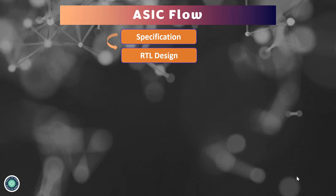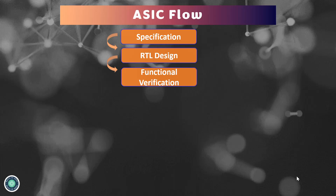After specification, RTL designing is done, where the designer converts the specification into RTL code using an HDL. In simple terms, the functional model is implemented into a hardware description language using Verilog or VHDL. Once RTL designing is done, functional verification happens, which confirms the functionality and logic behavior of the circuit by simulation. This ensures the design is logically correct and has no major timing errors.